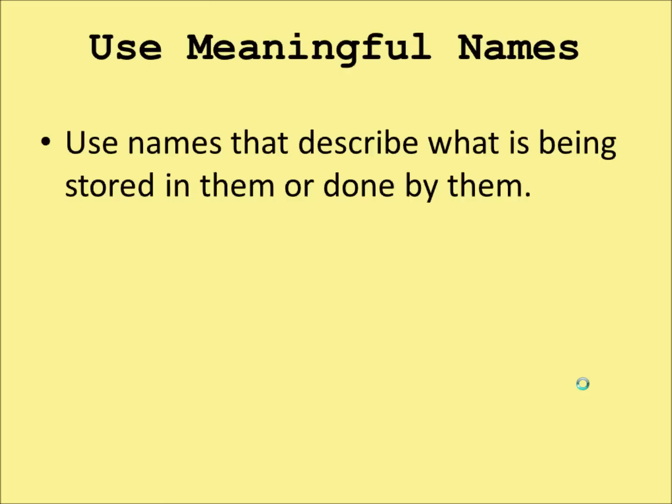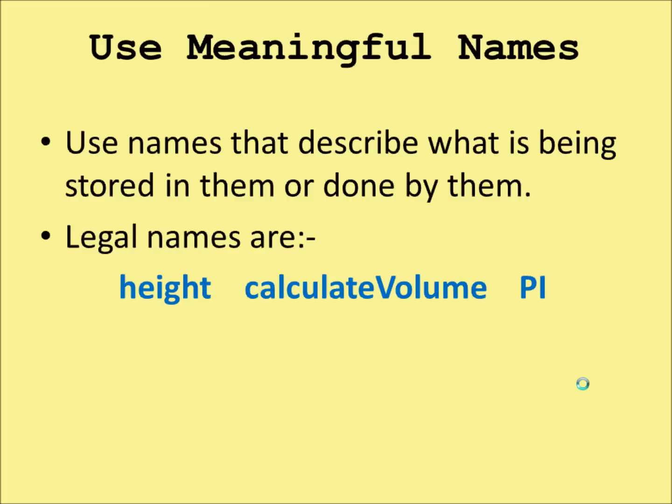Always use meaningful names — names that describe what's being stored in them, or what's done by them if they're a method. Legal names are 'height', 'calculateVolume', and 'PI'. Illegal names would be 'h', 'cv', or 'p'. Somebody coming after you will not know what 'h' refers to, will not know what 'cv' does, or will not know that 'p' is a constant. Make sure you use meaningful names so that everybody knows exactly what you're dealing with.